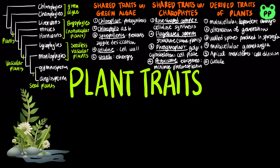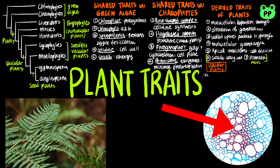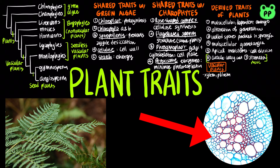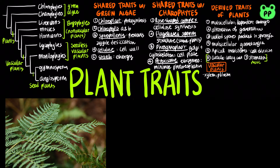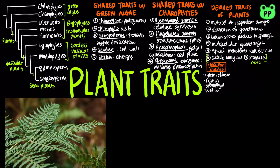Most plants also contain a waxy coat known as the cuticle, and the leaves contain openings known as stomata. Derived traits of vascular plants include xylem, which is the vascular tissue that functions in water and mineral transport; phloem, which is the vascular tissue that functions in nutrient transport; and lignin, which is the woody part that strengthens water-conducting cells and provides structural support. Sporophylls are leaves that bear sporangia, the organ that produces spores. Lastly, vascular plants have well-developed roots and leaves.